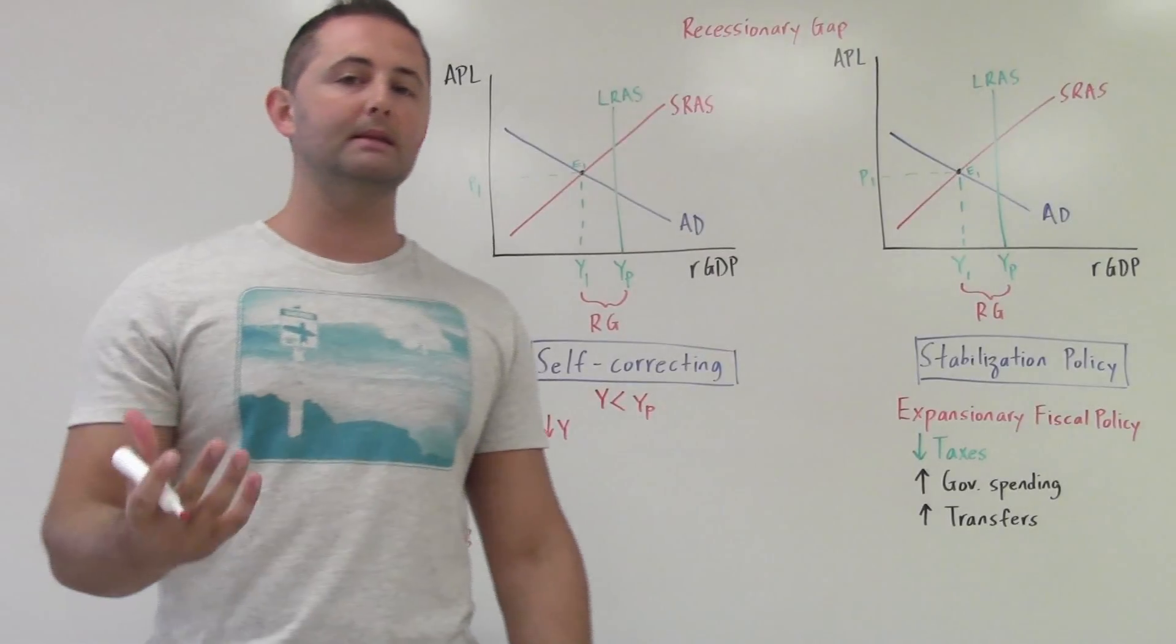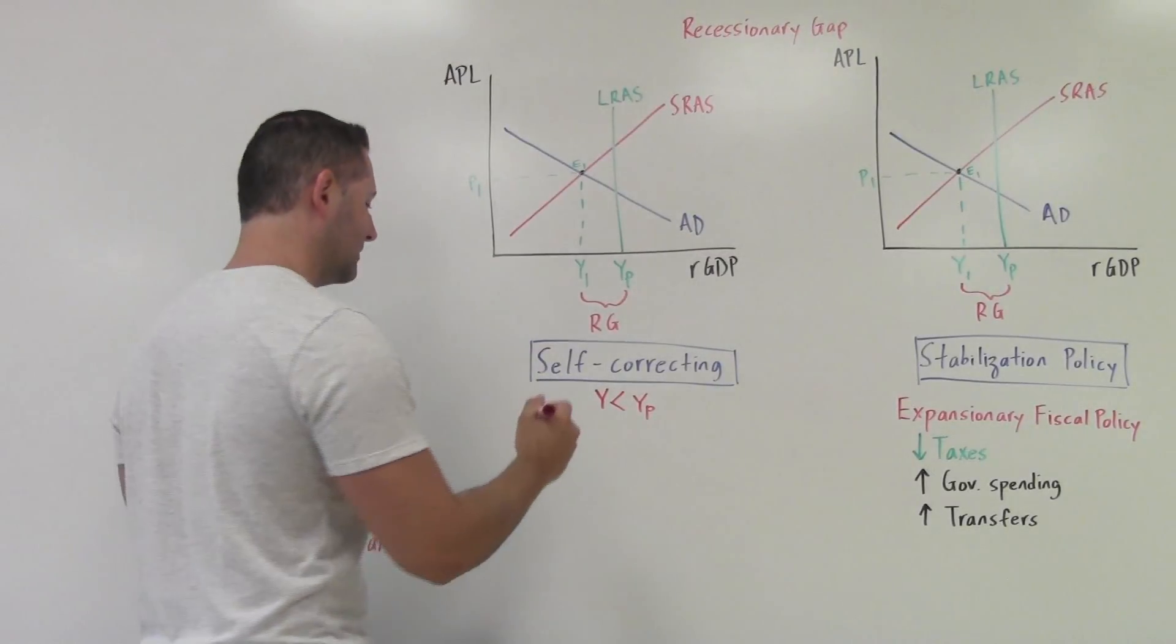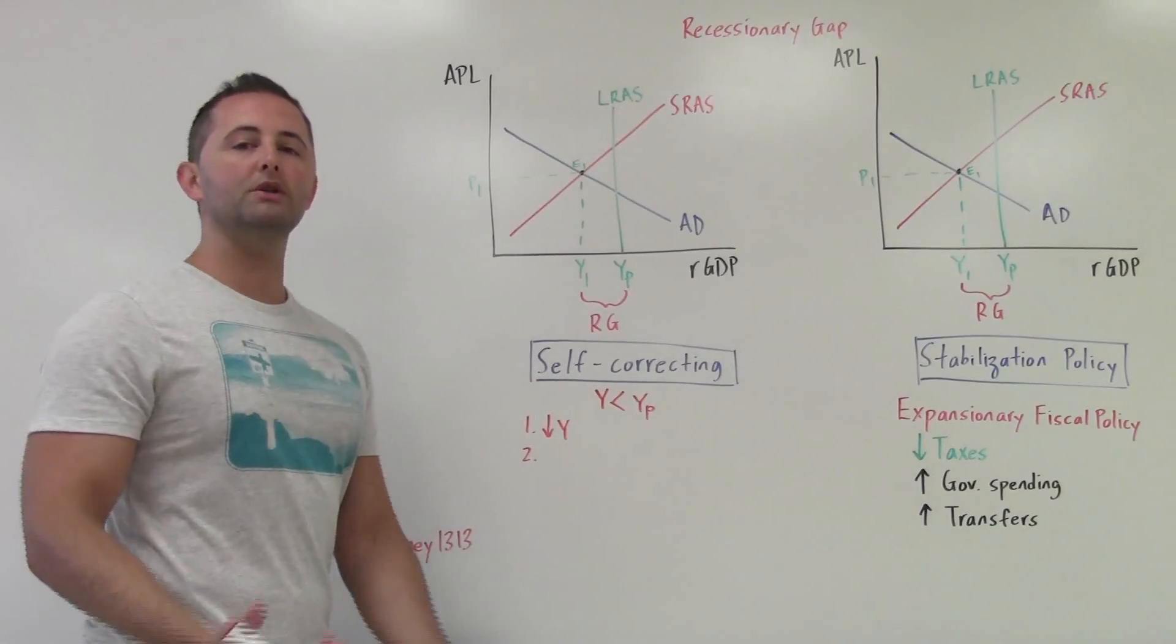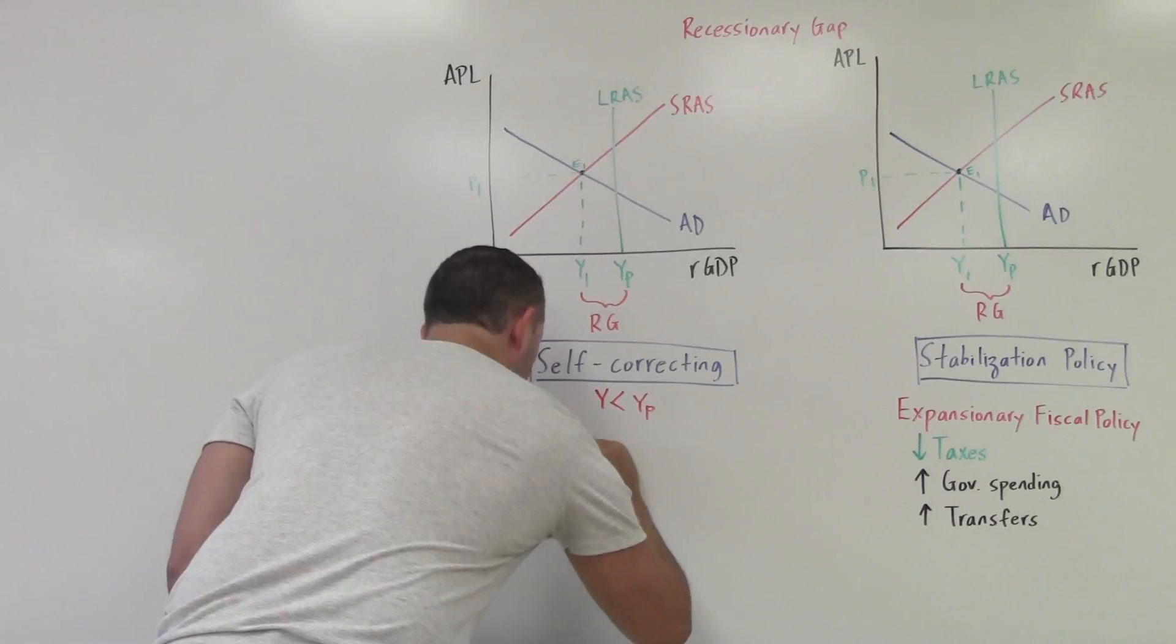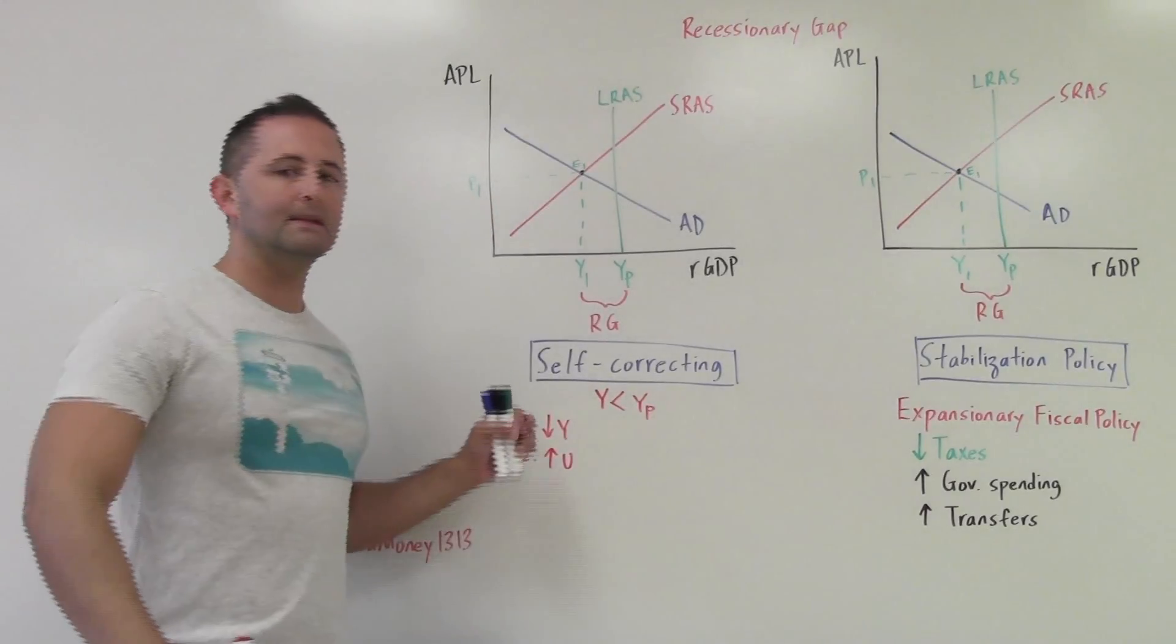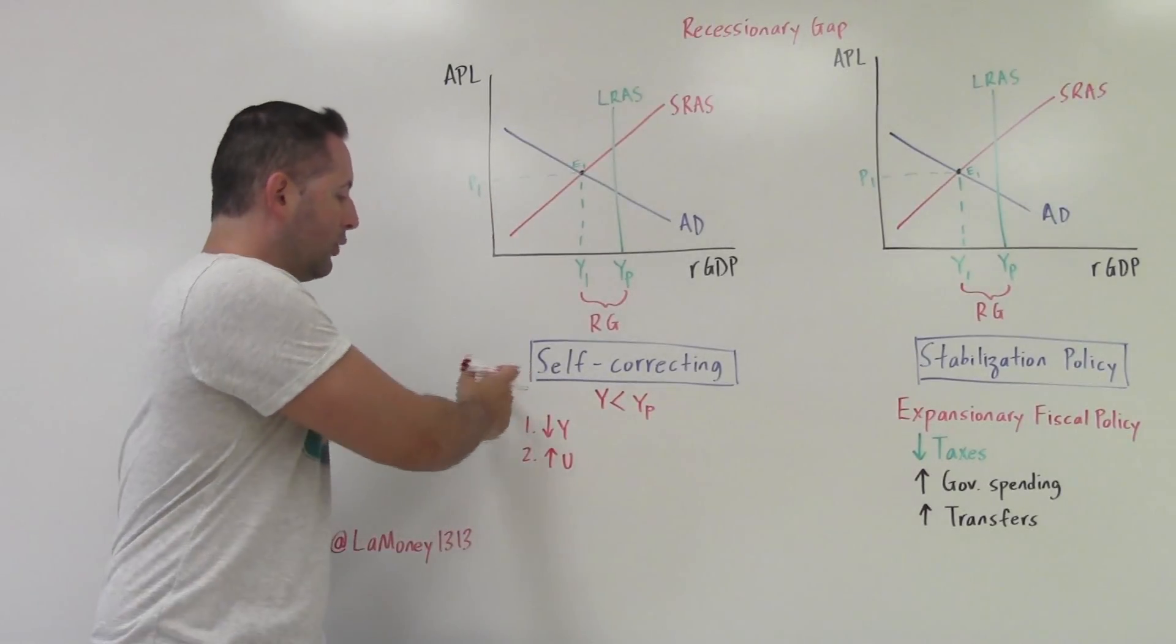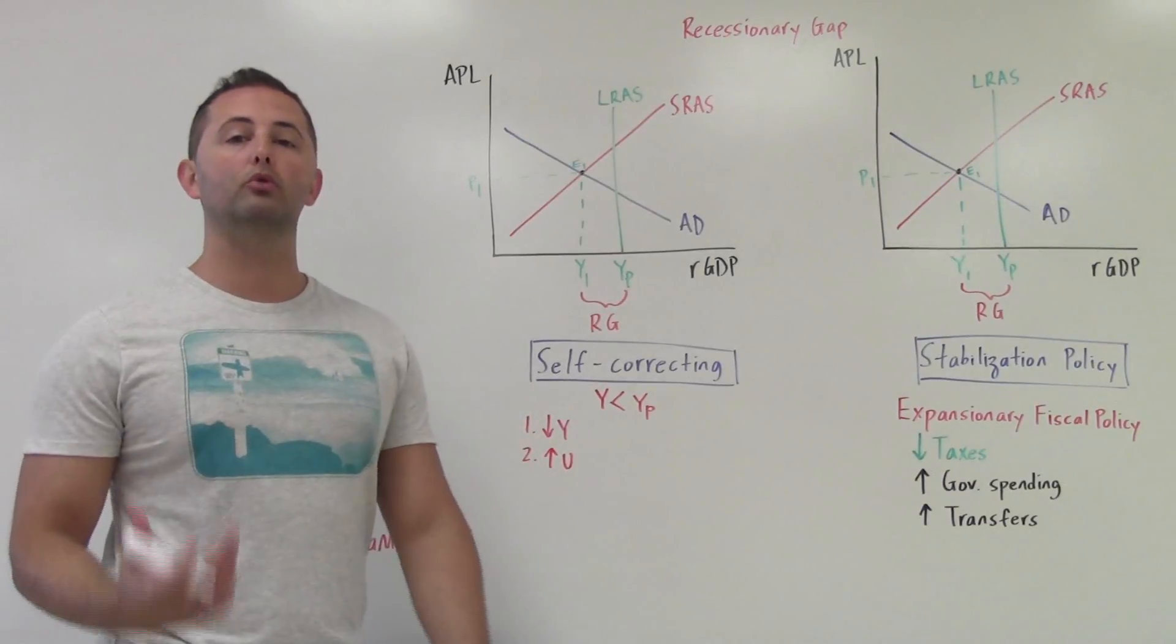If we were producing less things, then we do not need to hire as many workers because we're not being as productive. So if we don't hire as many workers, unemployment is going to increase. One of the key things here is this negative relationship between output and unemployment. When output falls, unemployment rises.